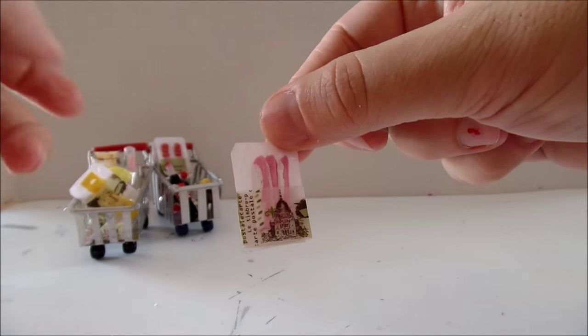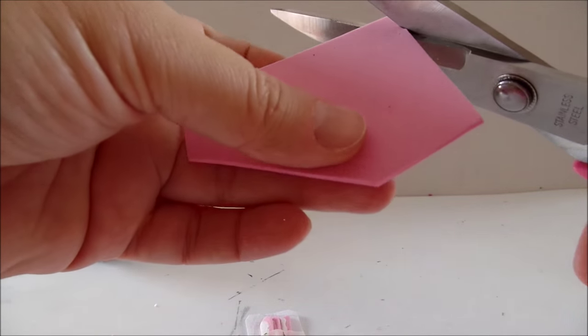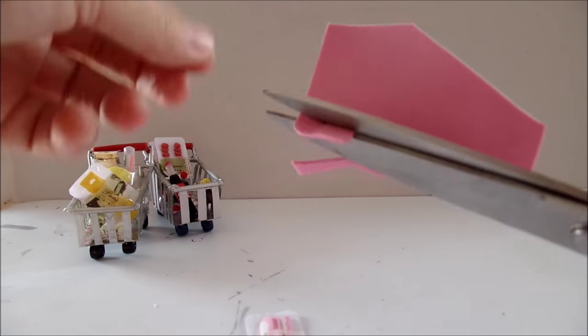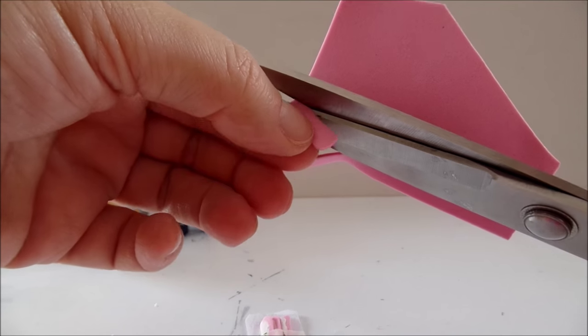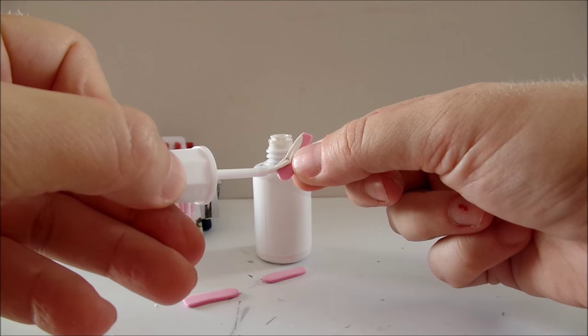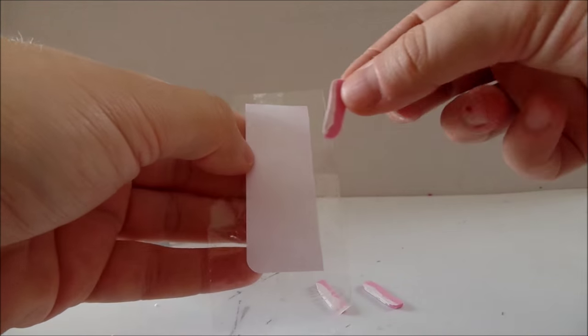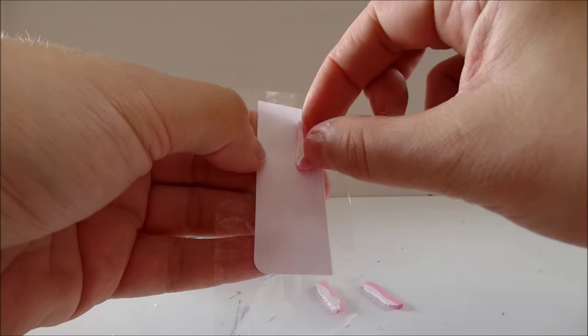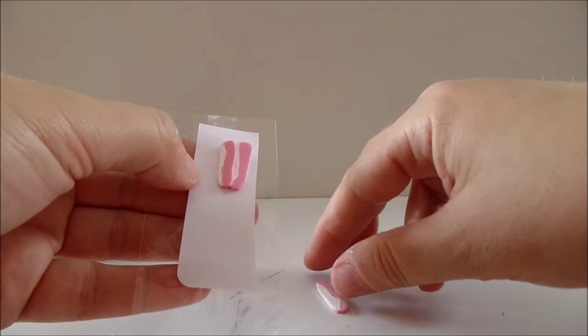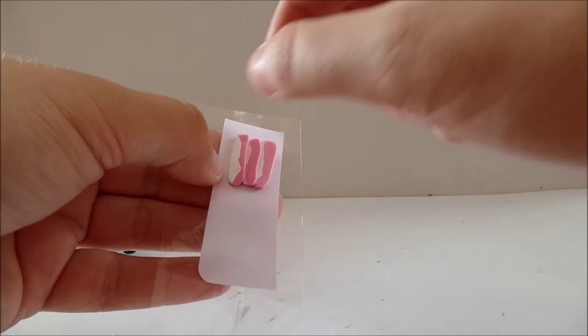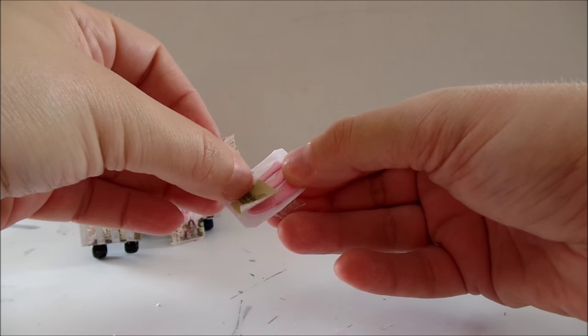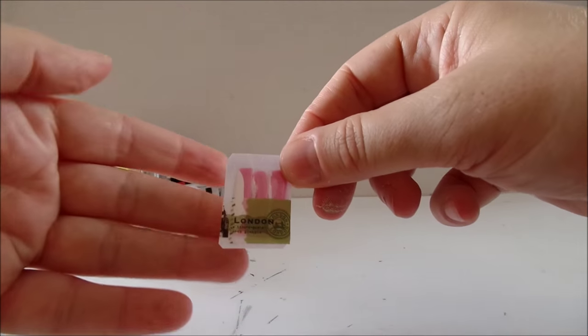To make this bacon, take a pink foam paper, cut out a couple of long strips, paint one side of it with this white out and package it in the same way. And you're done.